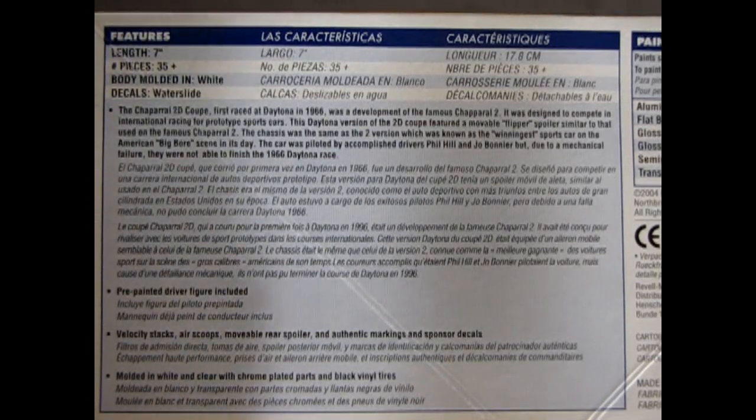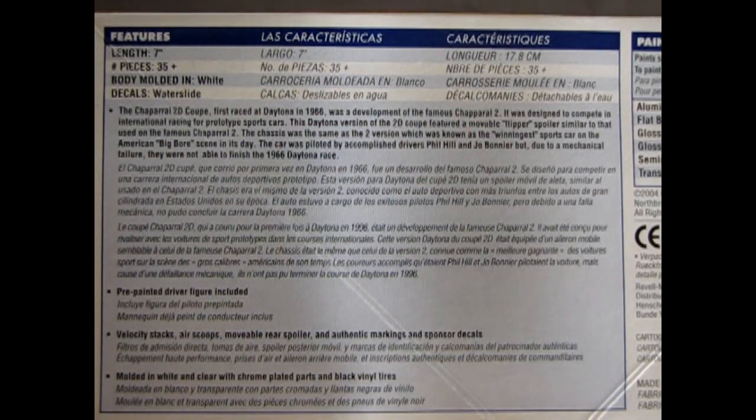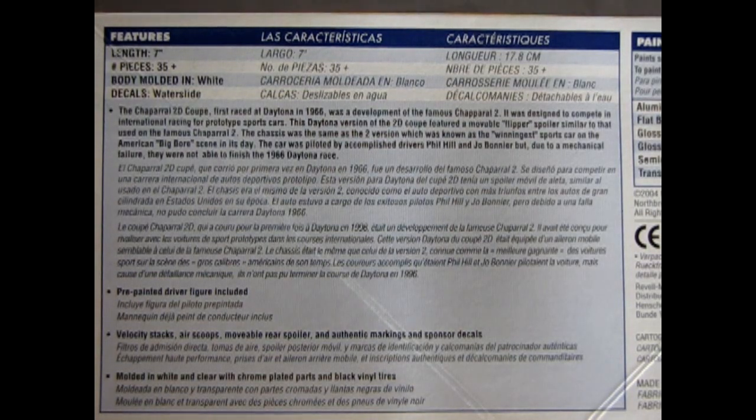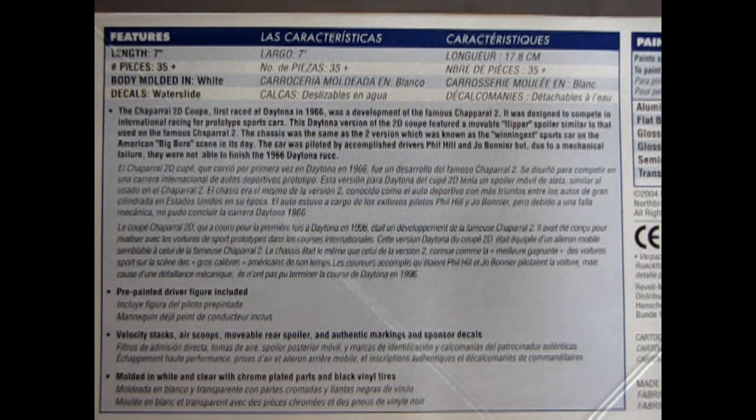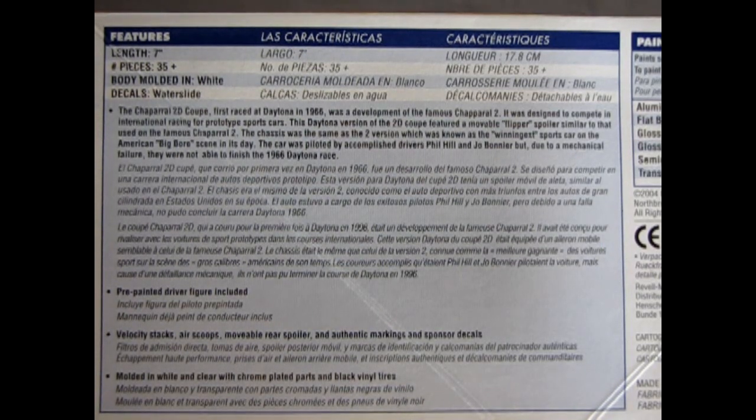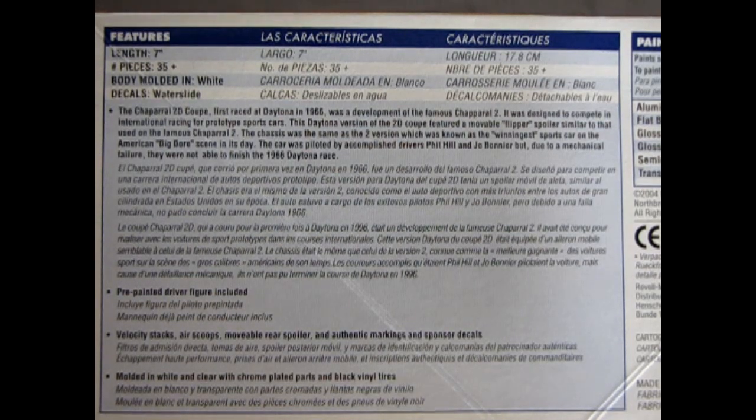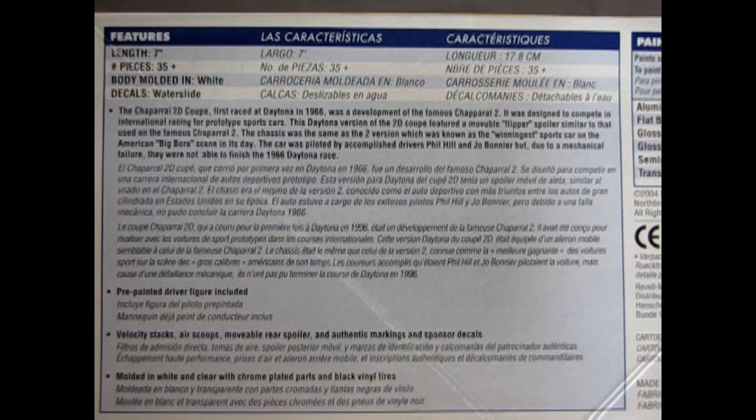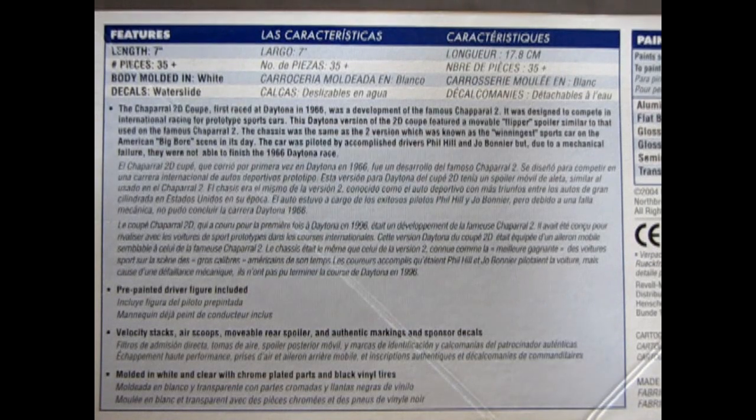The Chaparral 2D Coupe, first raced at Daytona in 1966, was a development of the famous Chaparral 2. It was designed to compete in international racing for prototype sports cars. This Daytona version of the 2D Coupe featured a movable flipper spoiler similar to that used on the famous Chaparral 2. The chassis was the same as the 2 version, which was known as the wingiest sports car on the American big bore scene in its day. The car was piloted by accomplished drivers Phil Hill and Joe Bonnier, but due to a mechanical failure they were not able to finish the 1966 Daytona race.